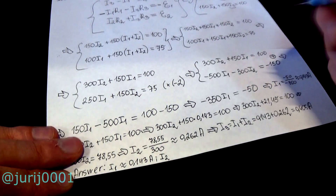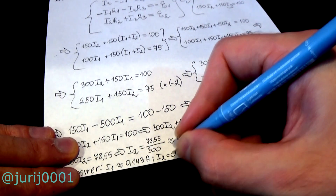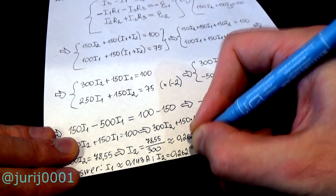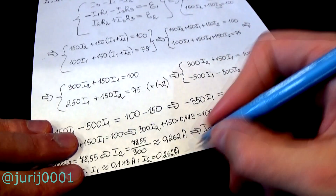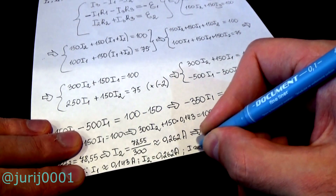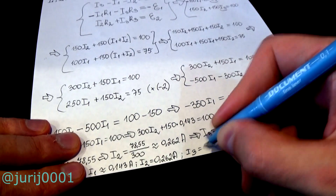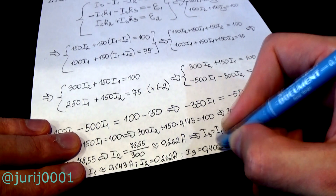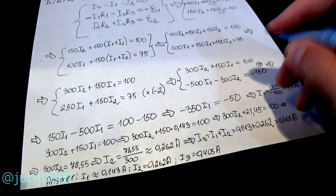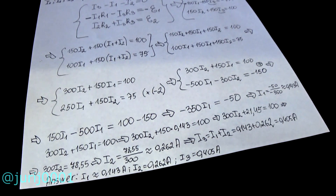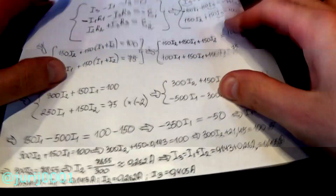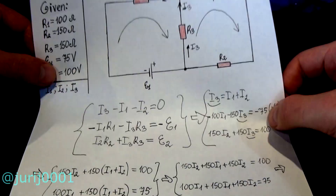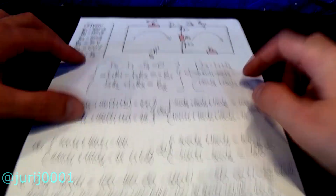So, my friends, we have the answers. In some cases, the currents may be negative. This will not be our mistake — you must indicate in the response that the selected current direction does not correspond to the true one.